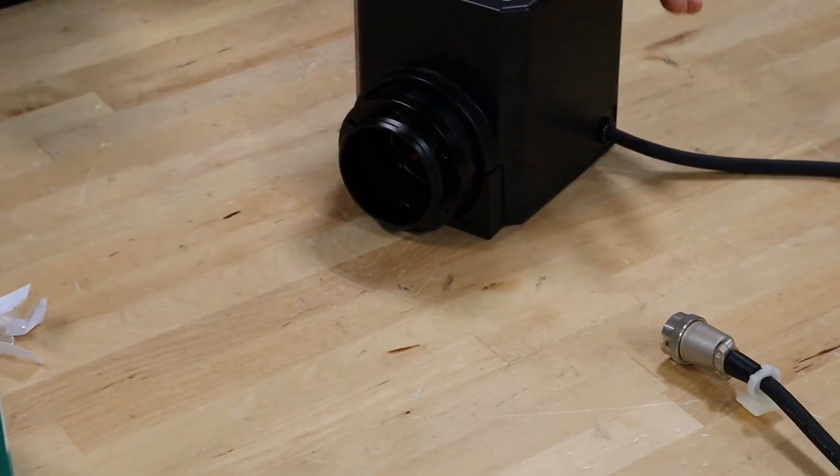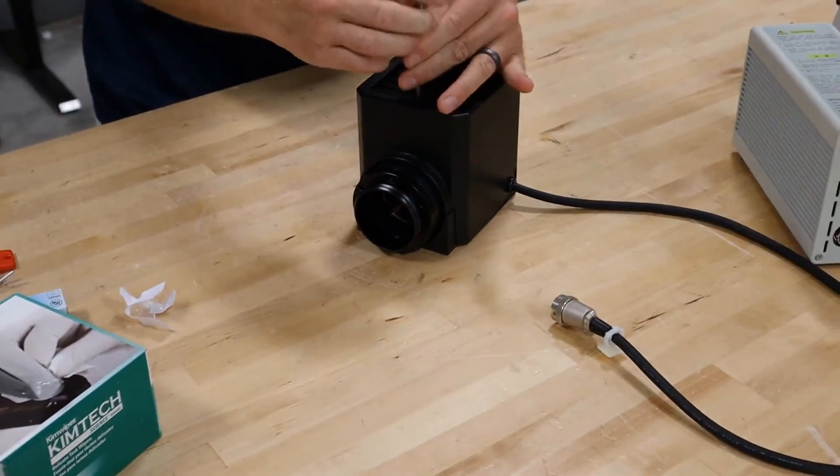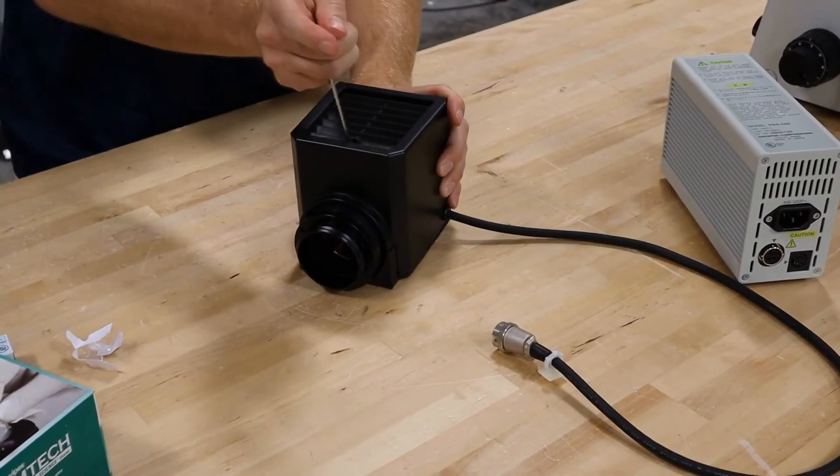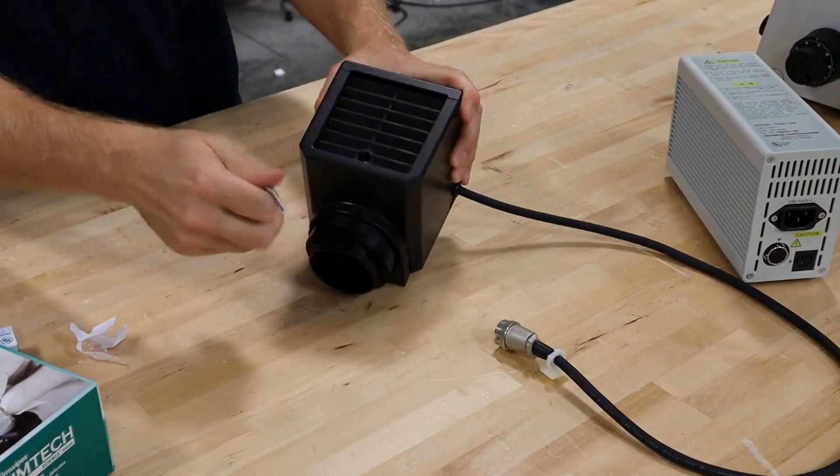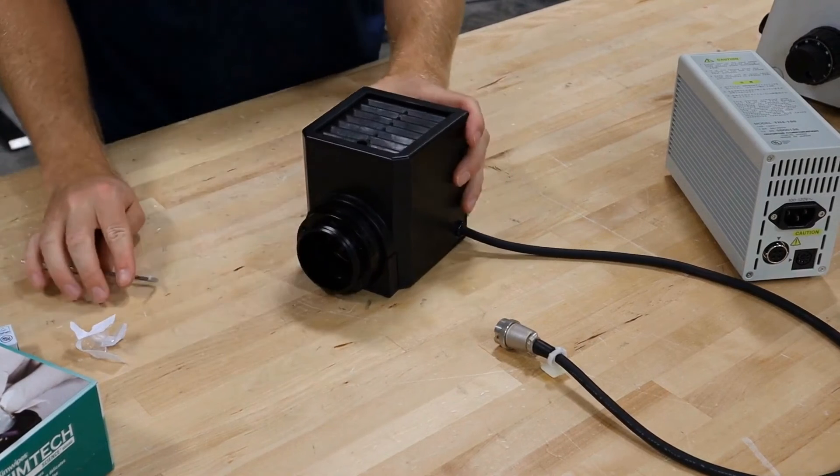And that's how to change the bulb on your Olympus BX50 N51 microscope. If you have any questions, please let us know and feel free to contact us if you have any other inquiries. Thank you very much. Have a good day.